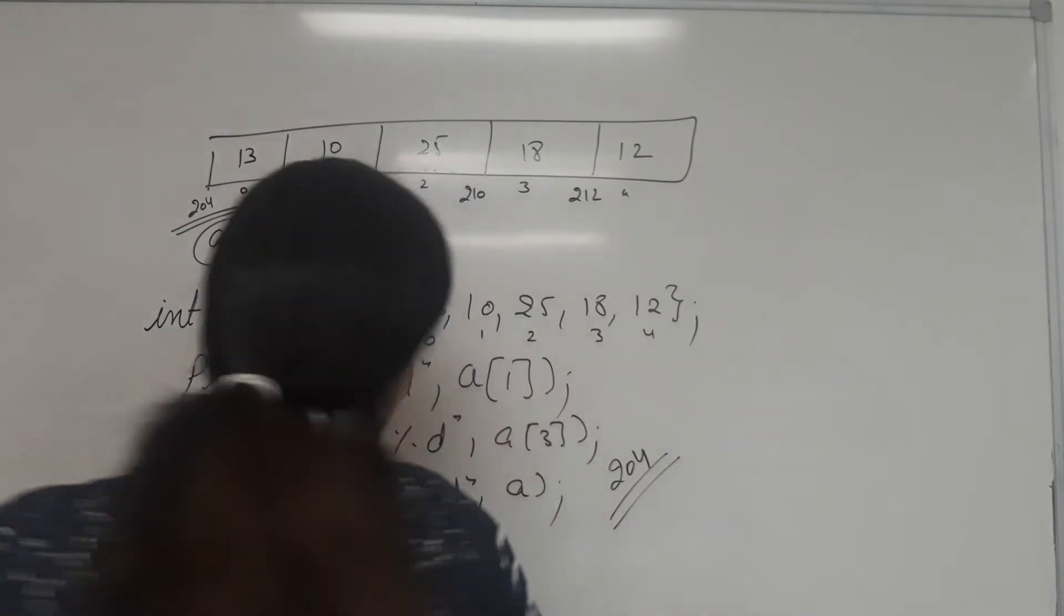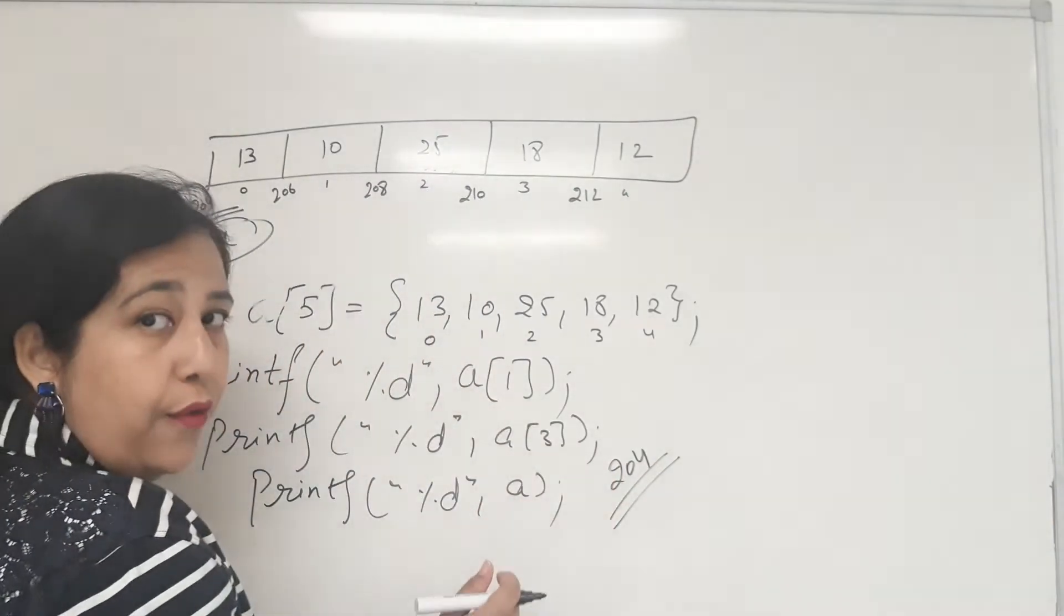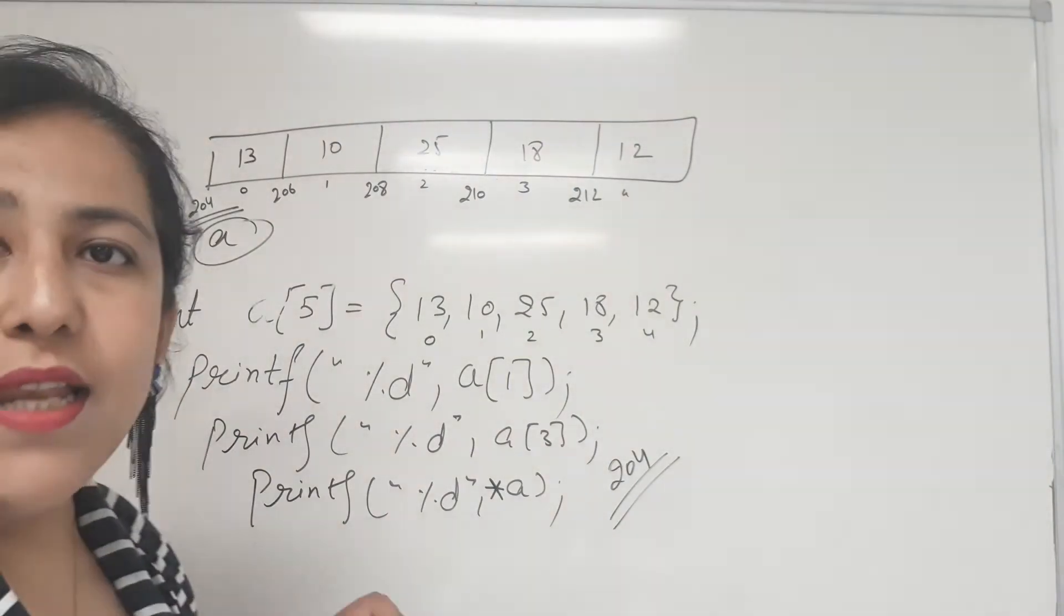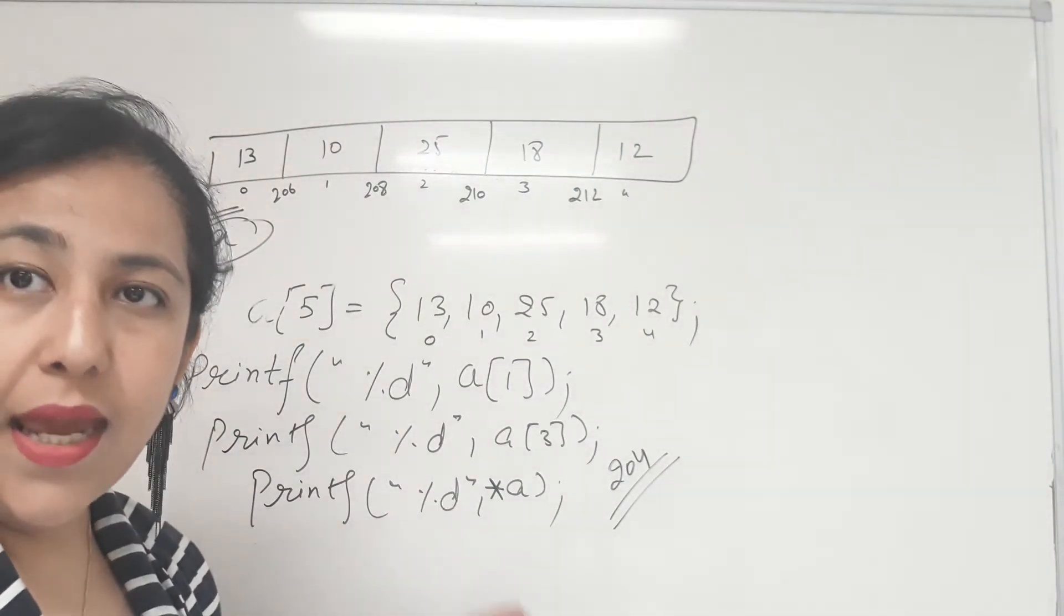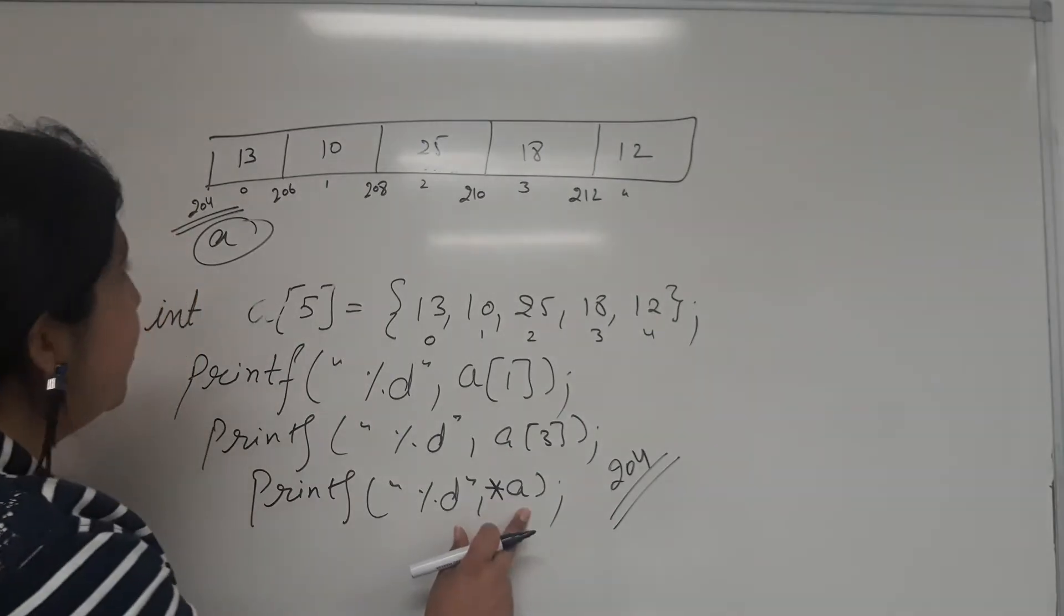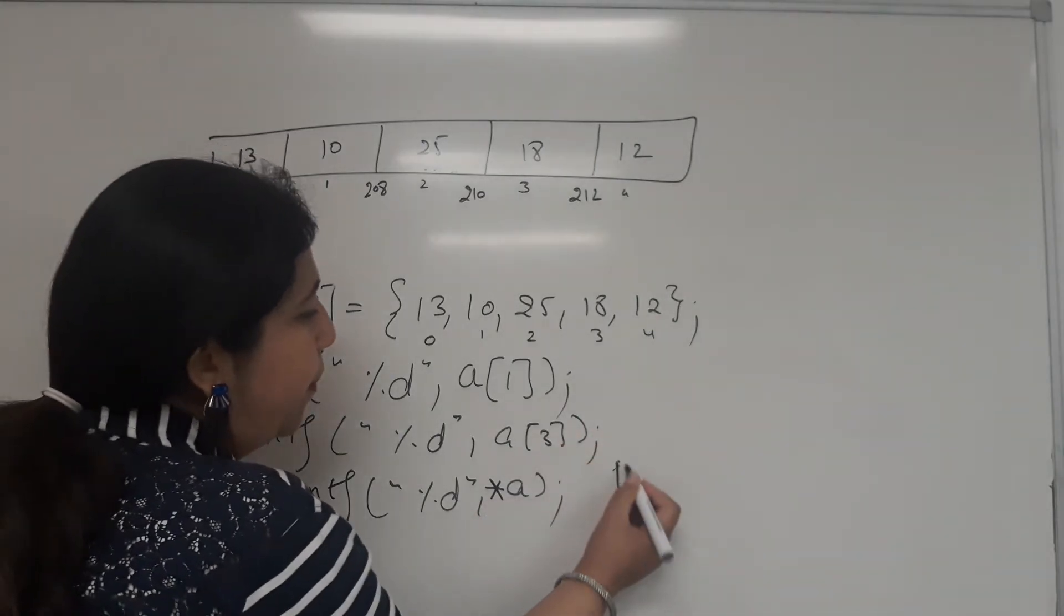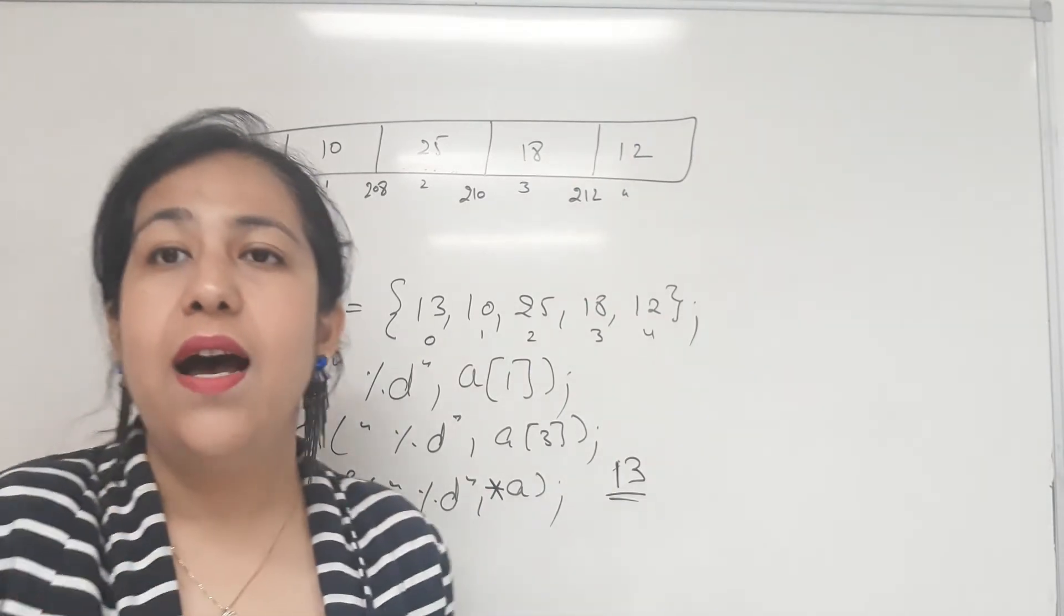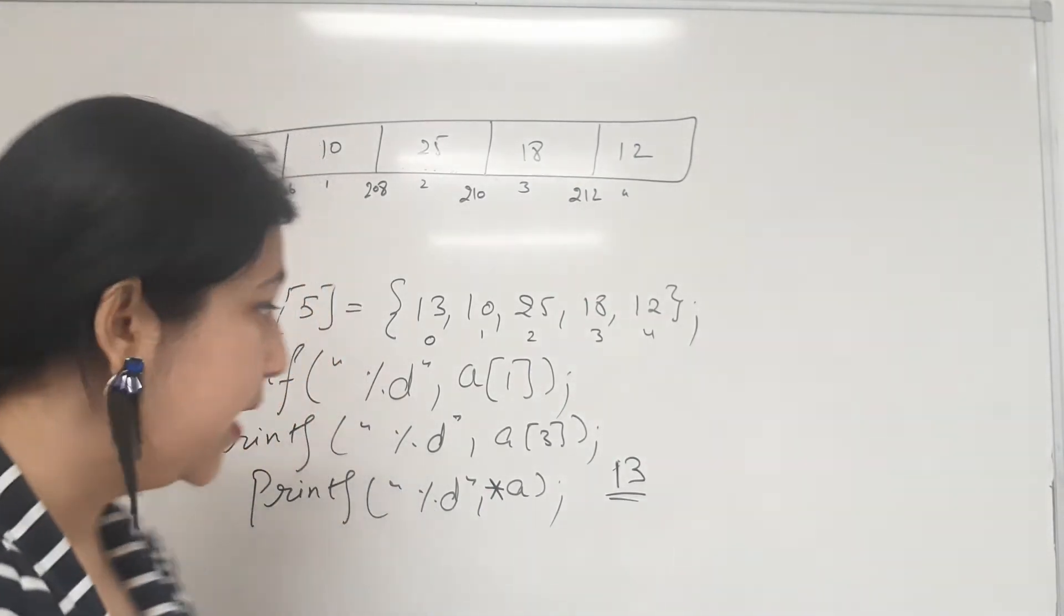Now coming back to the thing, we have seen that the name of the array is itself a pointer which holds the base address of the array. Now, if I write printf a, then 204 will print. But if I write printf star a, that is value at address a, so value at address a will not print 204, now 13 will print. So star a is gonna give you 13 now.